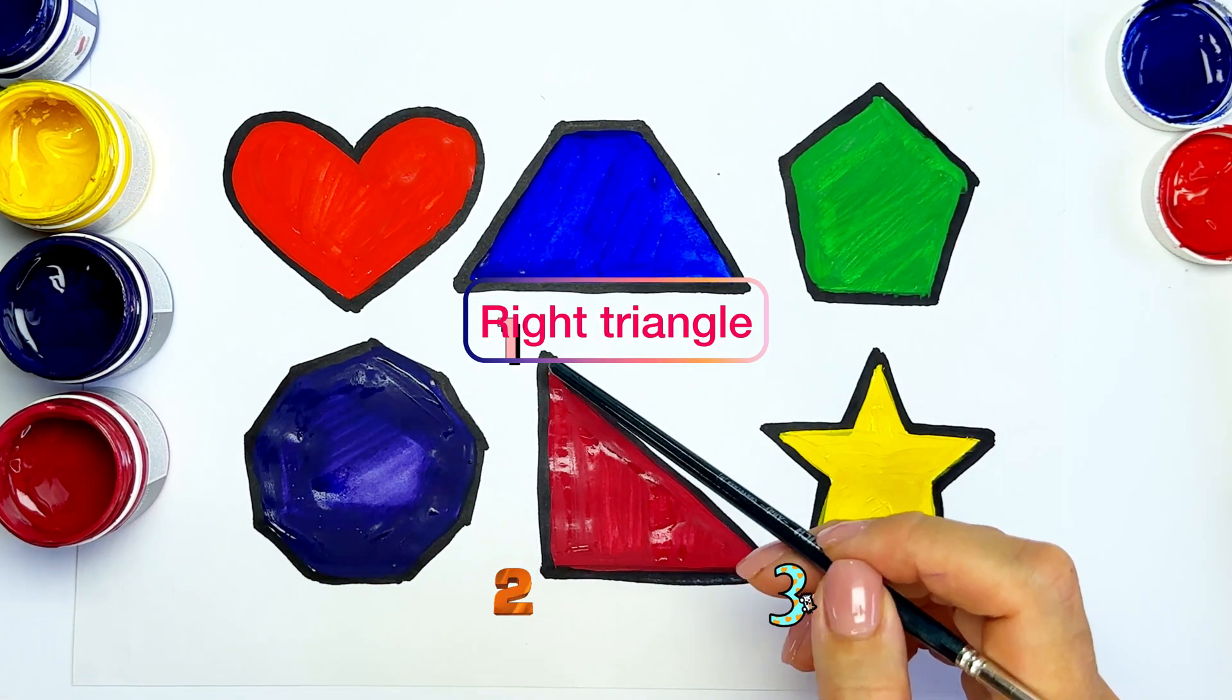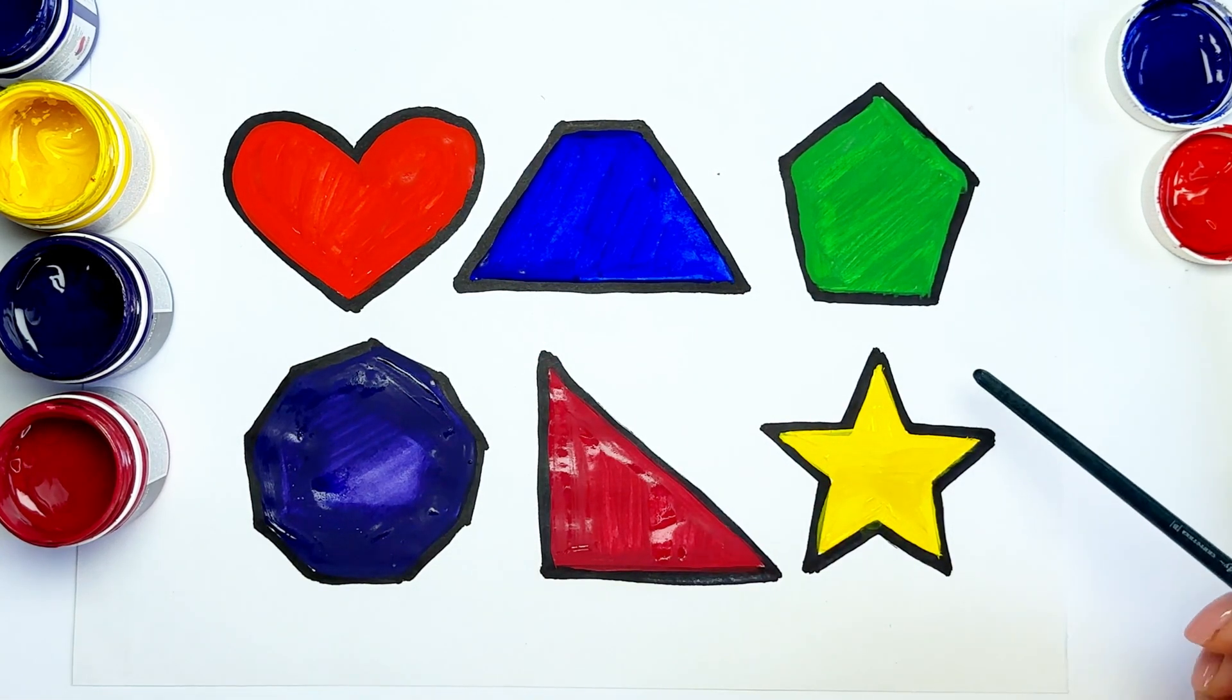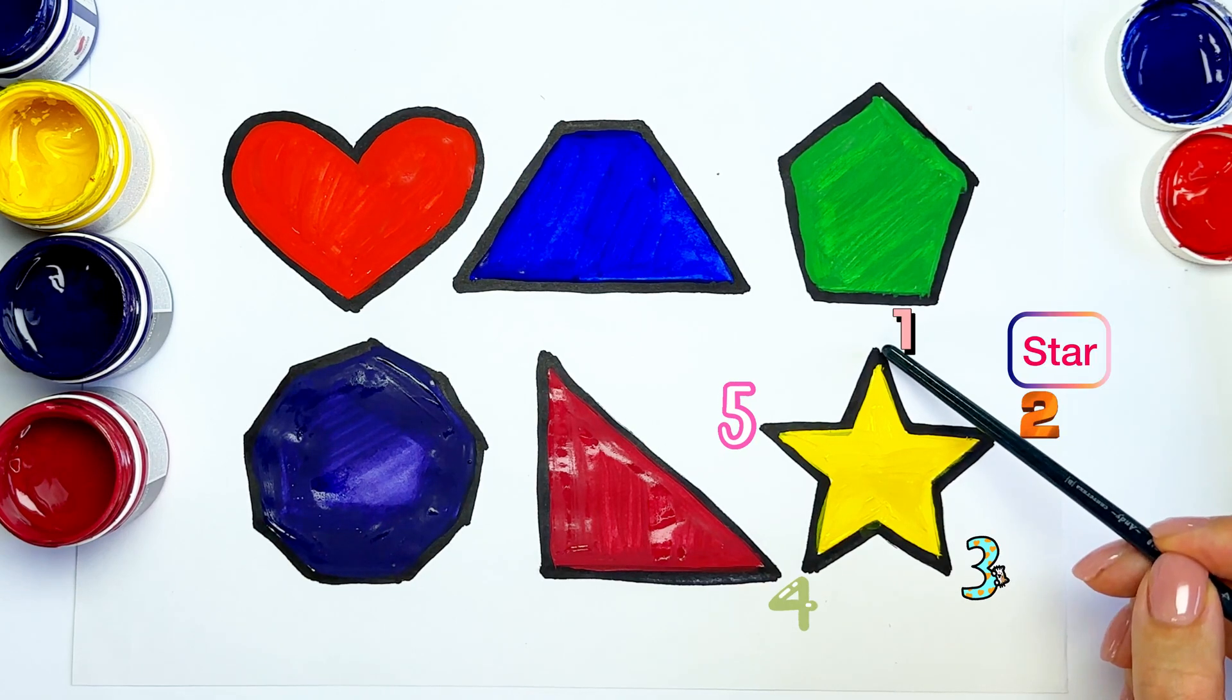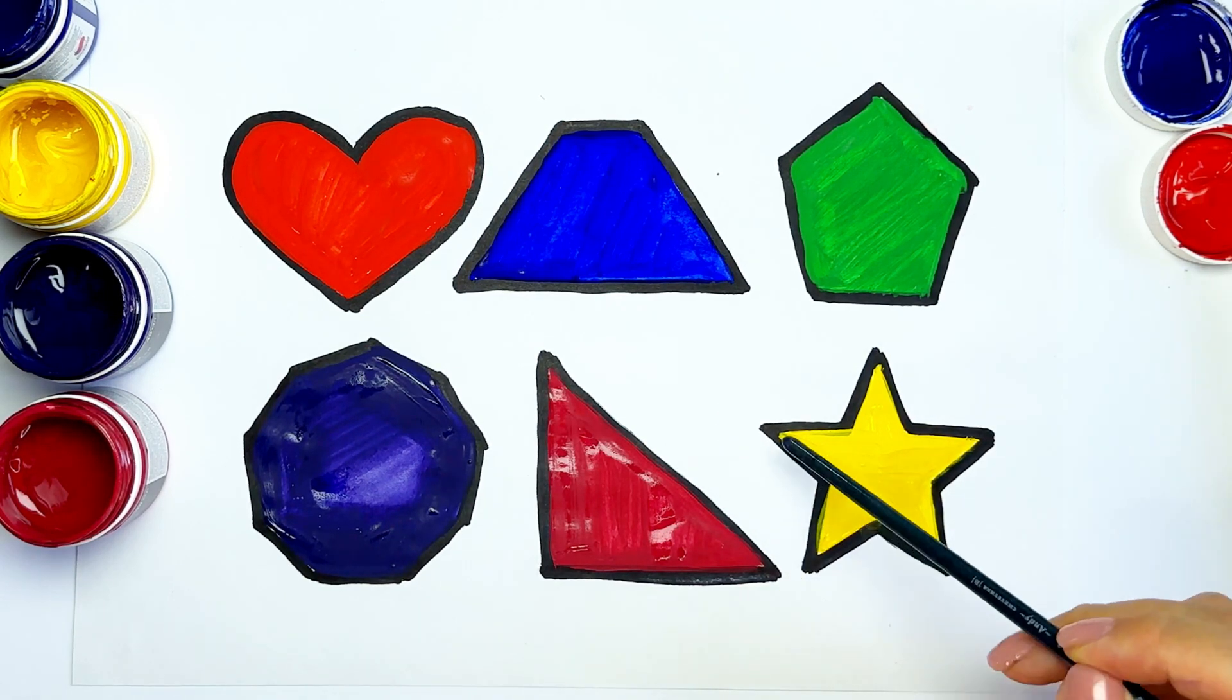Right triangle, three angles. And star, five pointed star, yellow color. One, two, three, four, five, six.